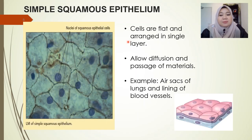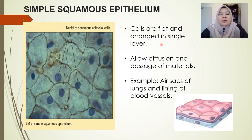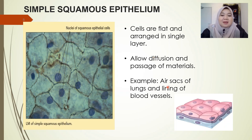The first epithelial tissue is called the simple squamous epithelium. Simple means a single layer of cells, and squamous means flat cells. The cells in simple squamous are flat and arranged in a single layer. Because of this thin and flat structure, they are perfect for processes like diffusion, allowing passage of materials. You can find them in the air sacs of the lungs and also lining our blood vessels.